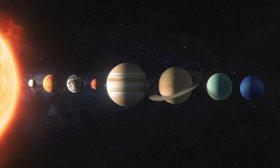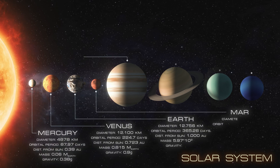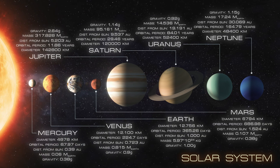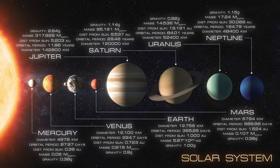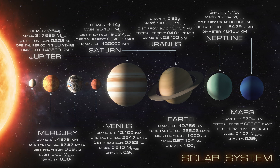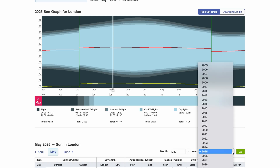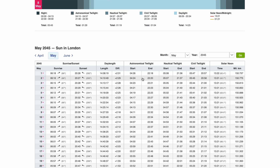The earth has been rotating in the same orbit for centuries, without a second's delay, without changing its orbit. The solar system is under the control of such a power that we can know today what time the sun will rise in the morning 20 years from now. For example, it is already known what time the sun will rise in London in 2045.